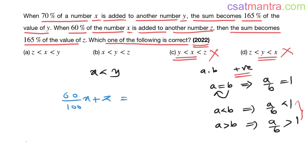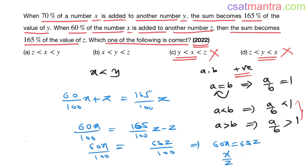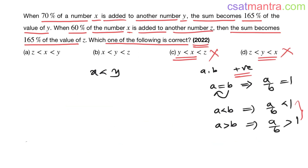For the second statement: 60% of x is added to z, giving 165% of z. So 60x/100 = 165/100·z − z = (165z − 100z)/100 = 65z/100. Therefore, 60x = 65z, which gives x/z = 65/60, which is greater than 1.